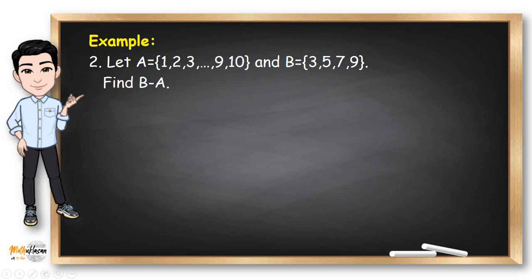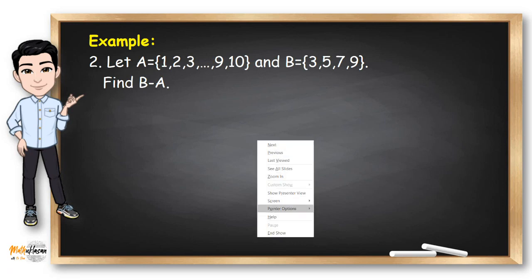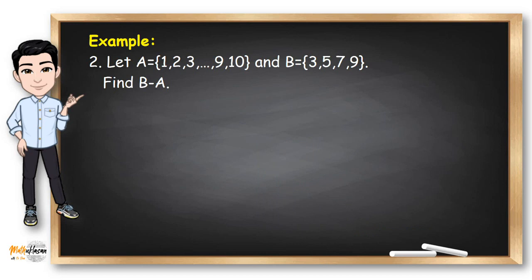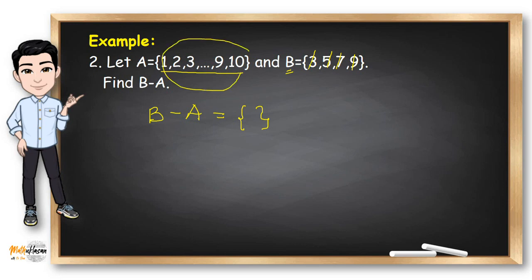Let's also try B minus A. Now the set being subtracted from is B, and the elements of A are numbers from 1 to 10. So we remove all of 3, 5, 7, and 9 from B because A contains all of them. What remains in B? The answer is the empty set, because A already contains everything B has.